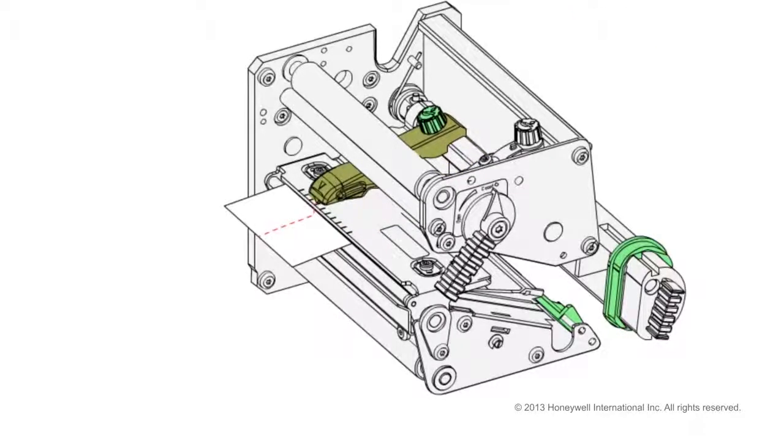Move the pressure arm inward or outward until the arrow on the pressure arm is centered on the media. Move the pressure arm at the part closest to the knob, not at the tip.